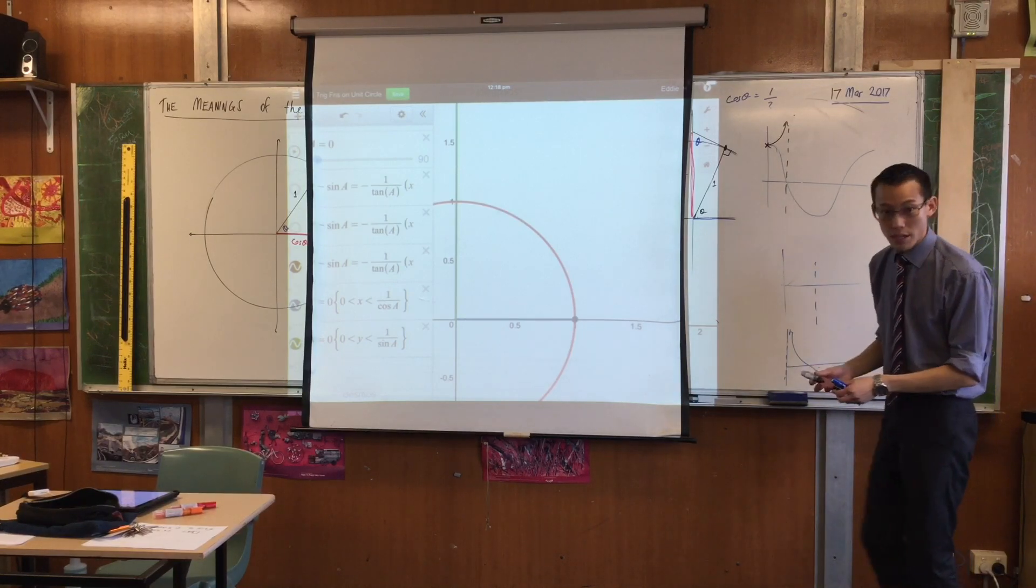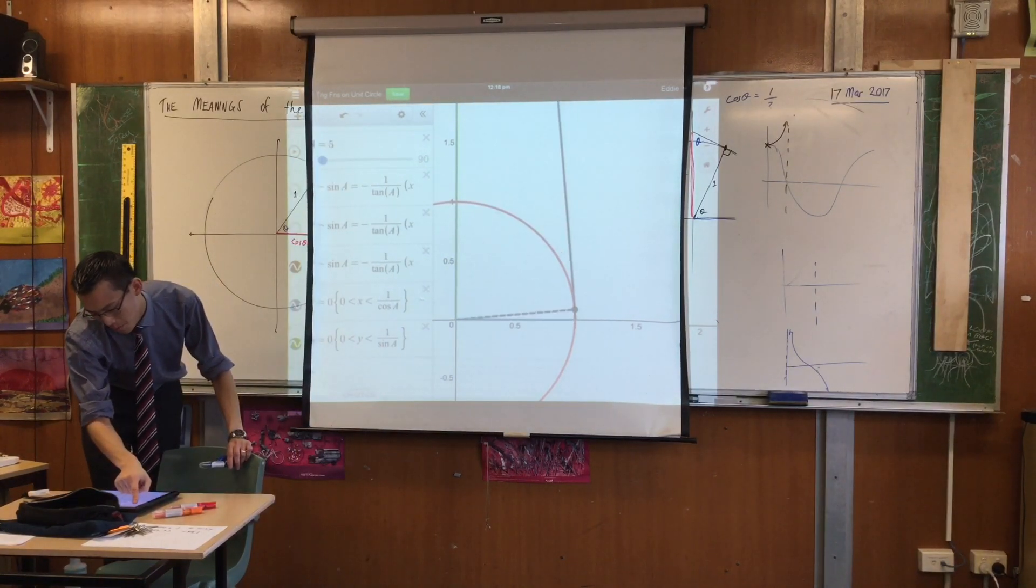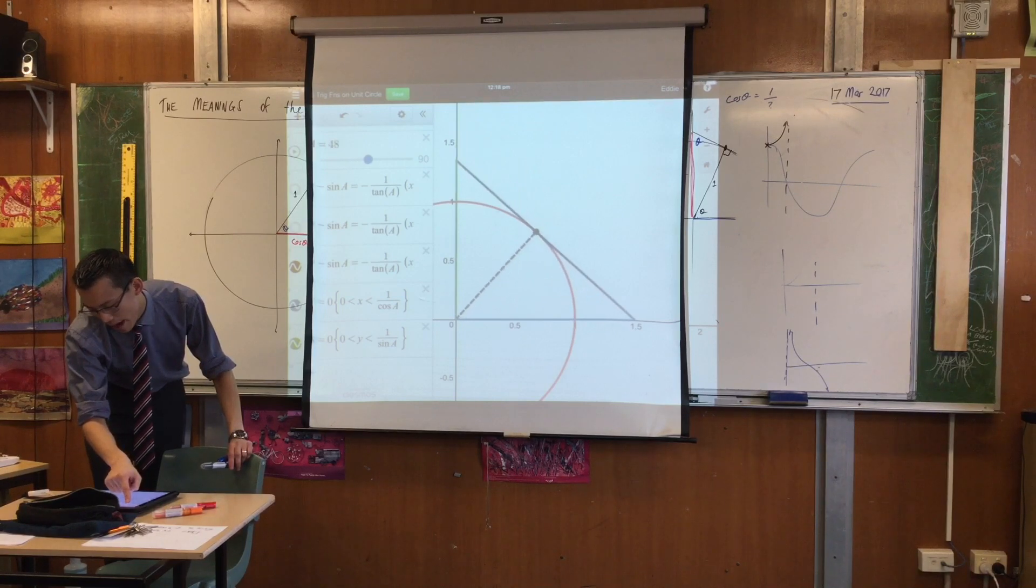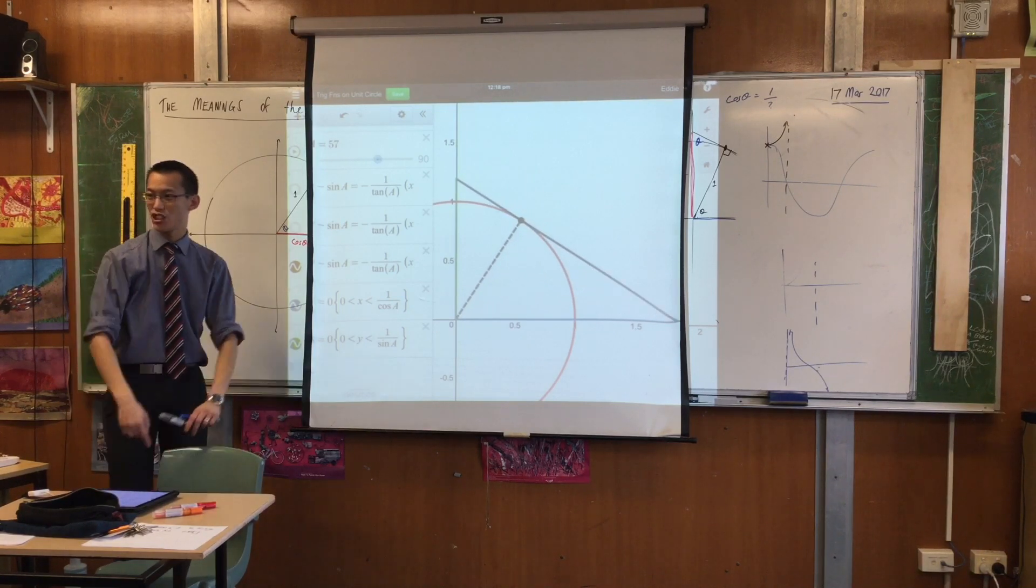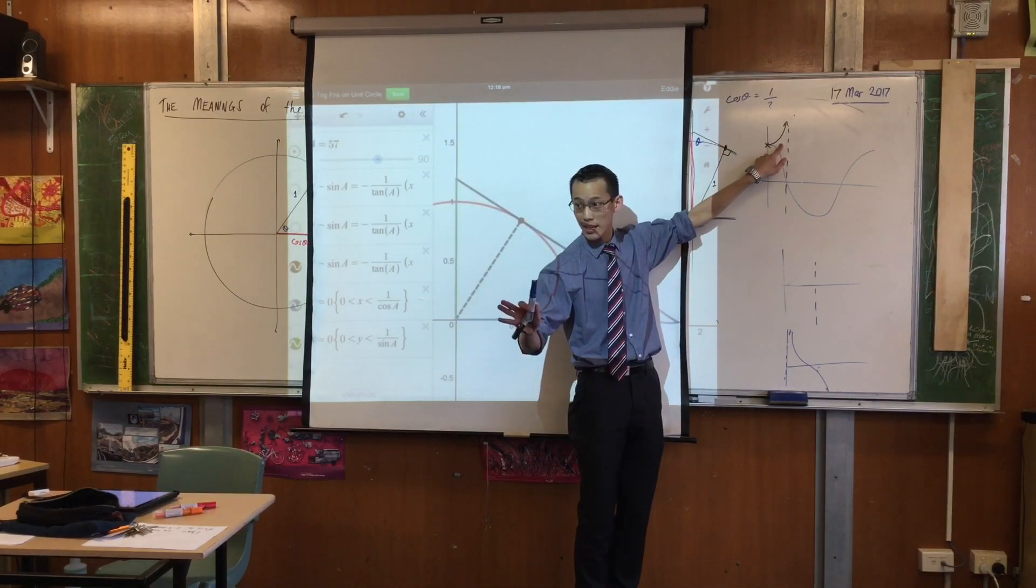And then as theta increases, what happens to sec? As theta increases... Look, what happens to it? It goes further and further and further away. And then at a certain point, it just skyrockets. Like that. Just like tan did. Does that make sense?